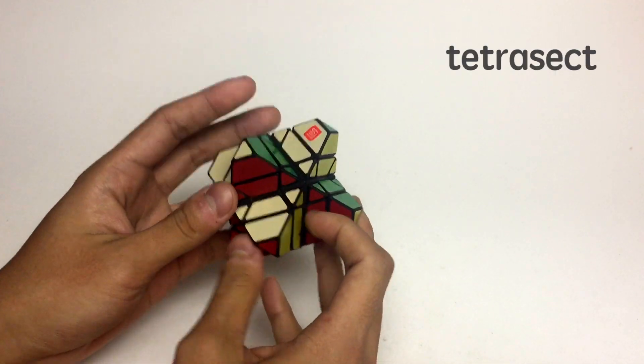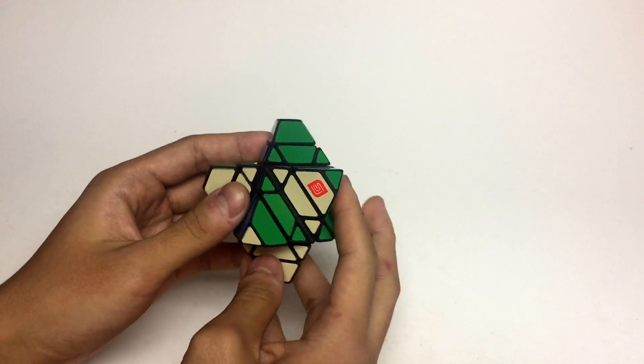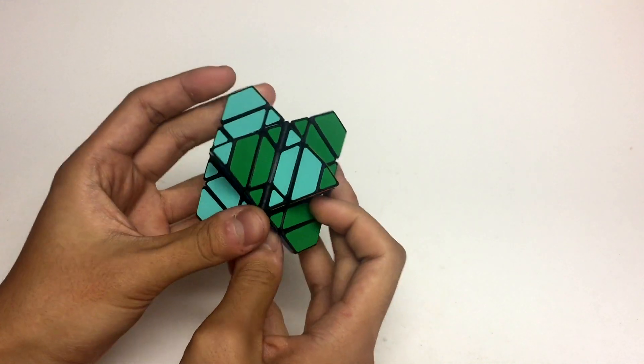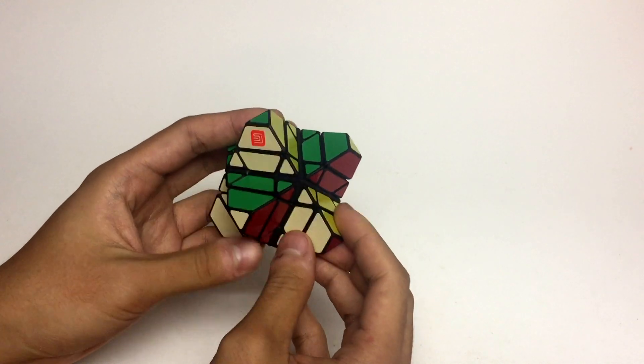Hey guys, this is the Tetra Sect, a hybrid face and corner turning cube in the shape of a stellated octahedron.